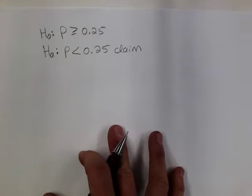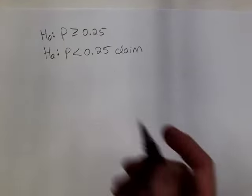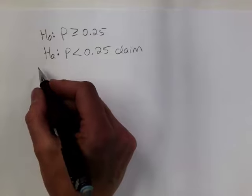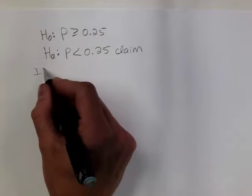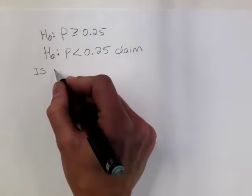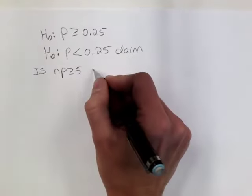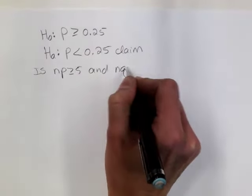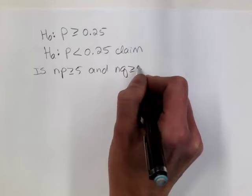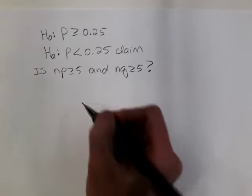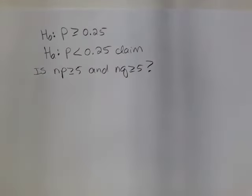Now let's quickly check to make sure that we can use the Z test. We want to know: is N times P at least 5, and N times Q at least 5? I do ask for this on your lab, but in the homework you probably won't have to do this step — maybe just a few at the beginning of the homework set.